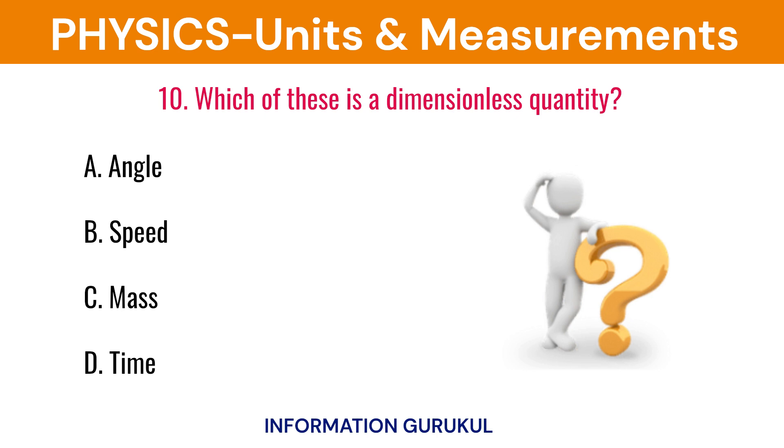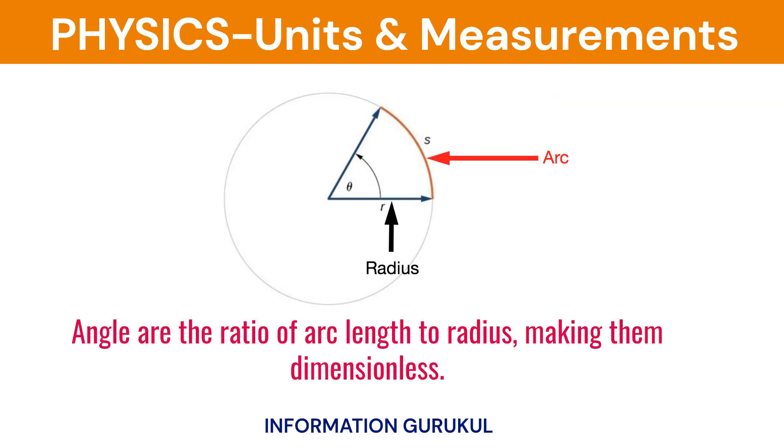Which of these is a dimensionless quantity? Angle. Angles are the ratio of arc length to radius, making them dimensionless.